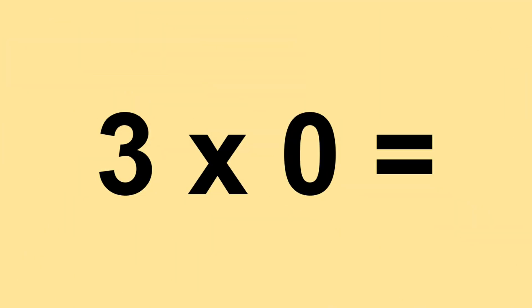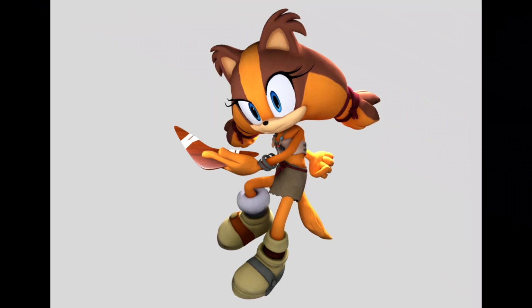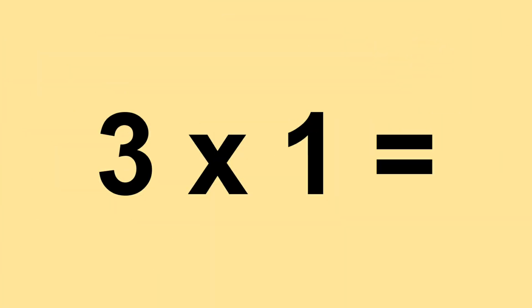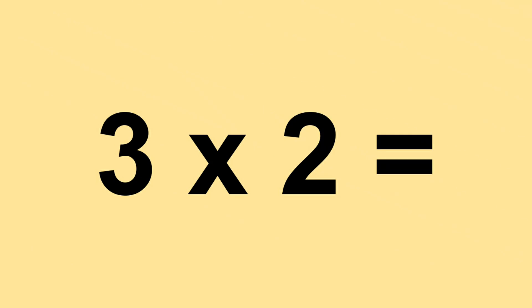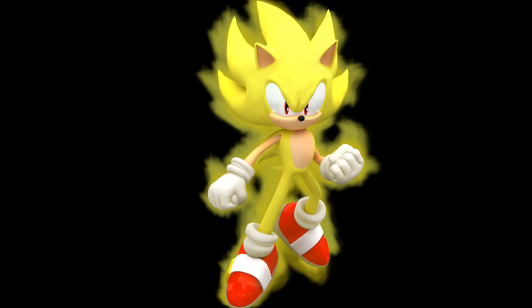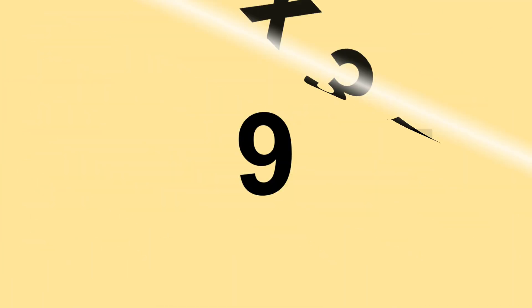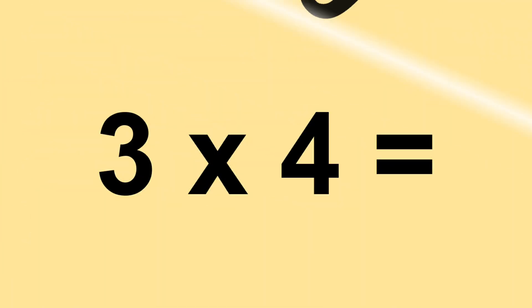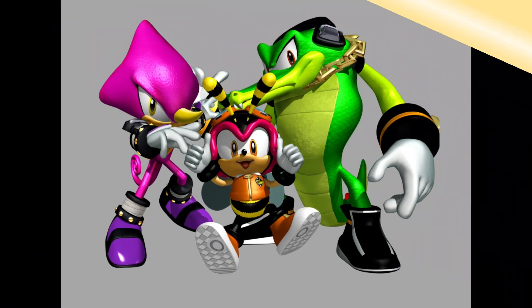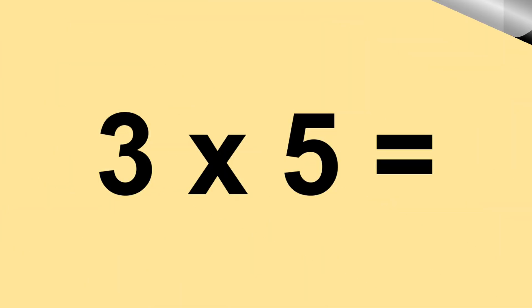Three times zero equals zero. Three times one equals three. Three times two equals six. Three times three equals nine. Three times four equals twelve. Three times five equals fifteen.